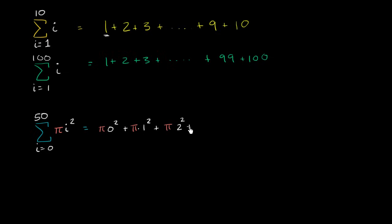I think you see the pattern here. And we're just going to keep going all the way until at some point we're going to keep incrementing our i. i is going to be 49. So it's going to be pi times 49 squared.